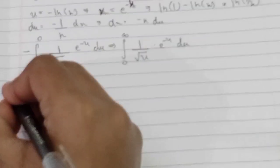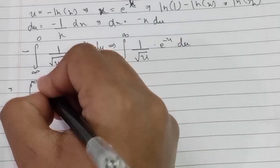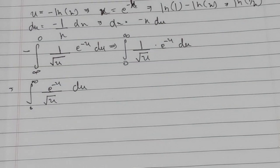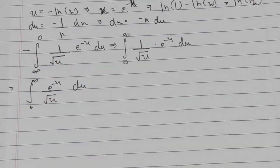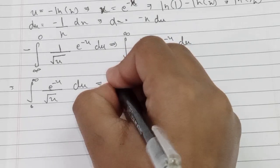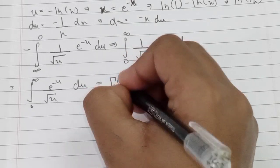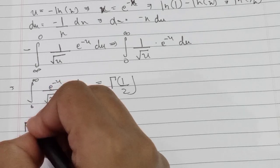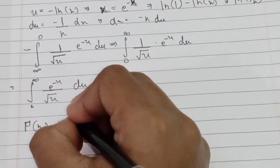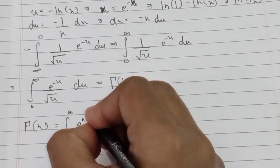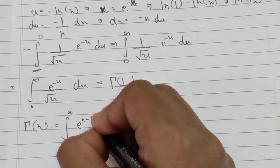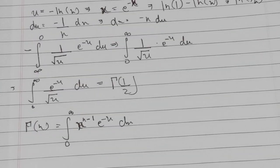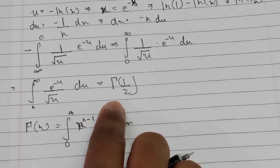This equals the integral from 0 to infinity of e to the negative u over square root of u du. This is actually the Gamma function of 1/2, because the Gamma function Γ(n) is defined as the integral from 0 to infinity of x to the n minus 1 times e to the negative x dx. So our integral equals Γ(1/2).